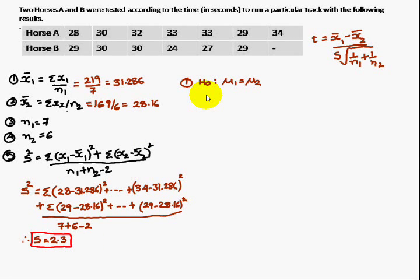So now we have to discuss whether the two horses have the same equal capacity or not. H0 you consider always mu1 is equal to mu2, both are having the same running capacity. H1 is mu1 not equal to mu2. Therefore, this is a two tailed test.